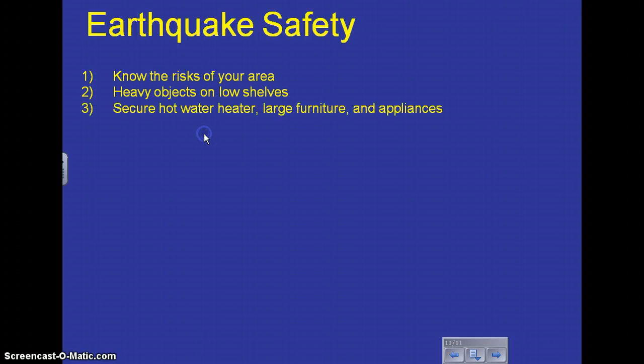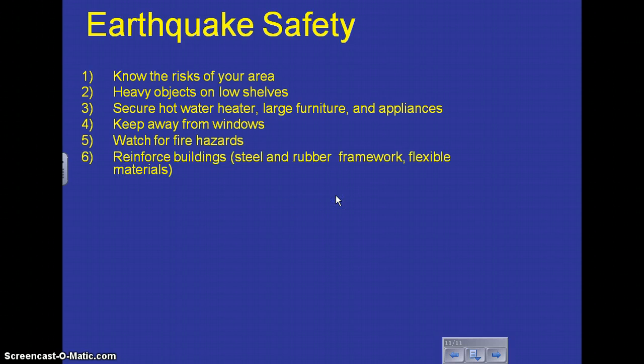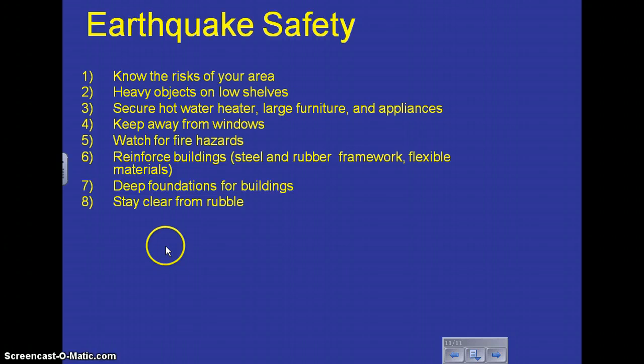There are some things that you can do to help your safety in an earthquake. I'm going to just list a few out for you. If you know how risky it is to live in your area, that's good to know. If you have heavy objects on shelves, it's best to put them on the lower shelves to kind of stabilize a shelf. Sometimes people will secure their hot water heaters and furniture and appliances down. They'll actually fasten them down. It's good to keep away from windows and watch for fire hazards. To use better building materials like steel and rubber framework that's stronger and a little bit more flexible is a good idea.